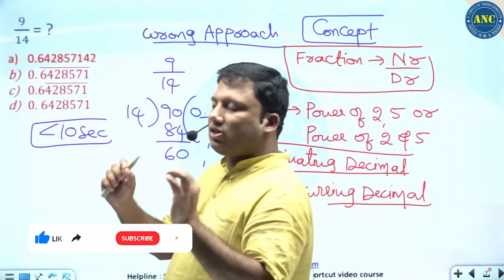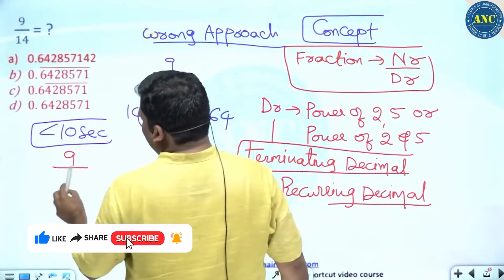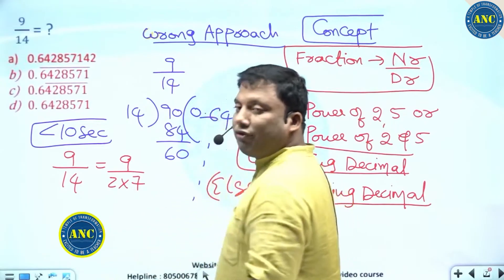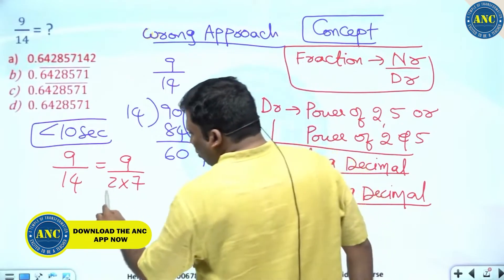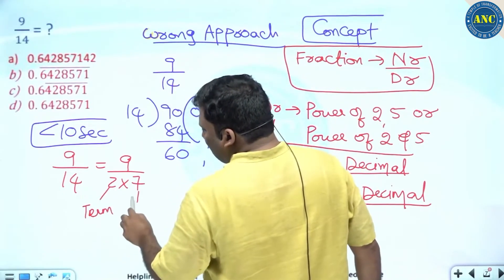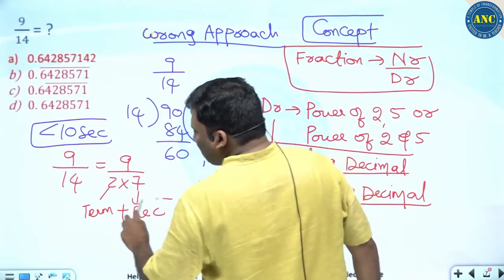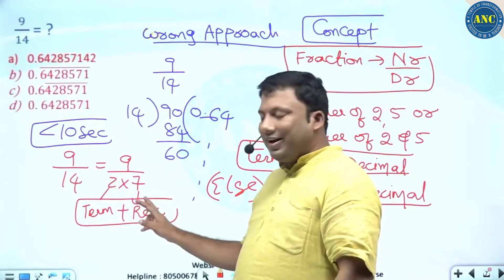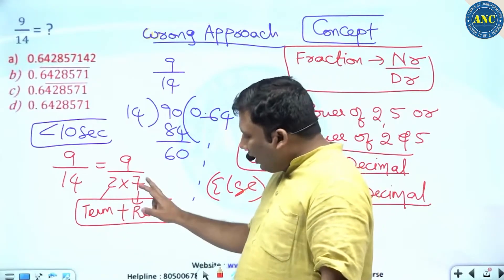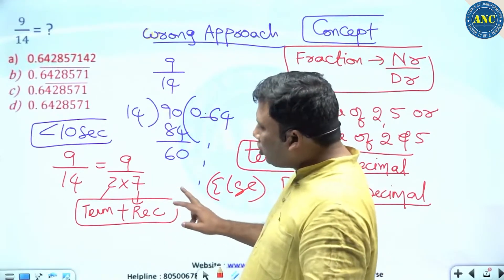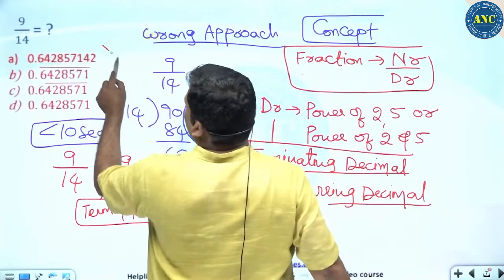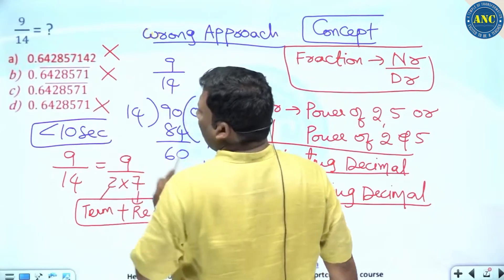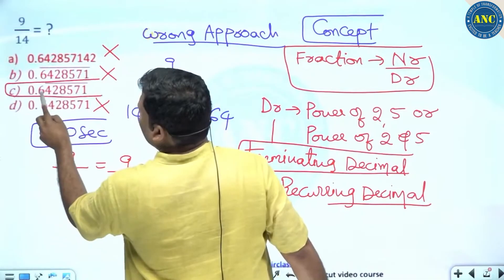If Anil's students are solving this question, how will they solve it? 9 by 14. 14 is defined as 2 into 7 — the factors of 14 are 2 and 7. The 2 means it is a terminating decimal; the 7 means it is a recurring decimal. The answer clearly shows it should be a combination of terminating and recurring. Terminating because it contains 2; recurring because it contains 7.